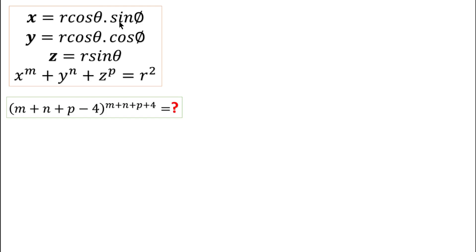Hello everyone. In this question the value of x is given, y is given and z value is given. Also x to the power m plus y to the power n plus z to the power p equal to r square is given. Then we have to find the value of this. This is an easy and simple question and I will solve it with two methods.